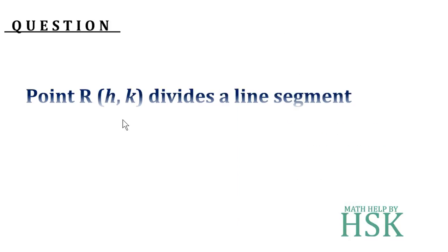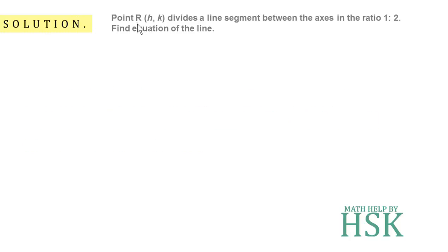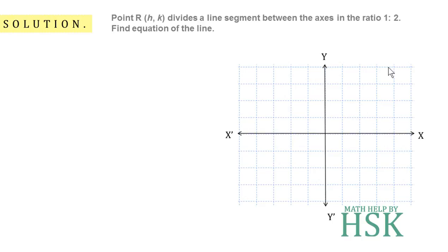The question is: point R divides the line segment between the axes in the ratio 1 is to 2 — find the equation of the line. So we have a point h,k which divides the line segment between the axes in the ratio 1 is to 2. We represent this condition in the figure.